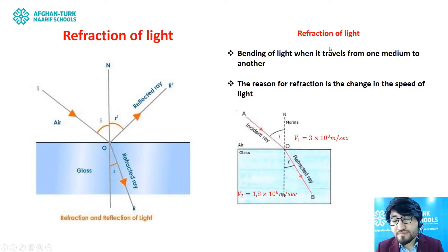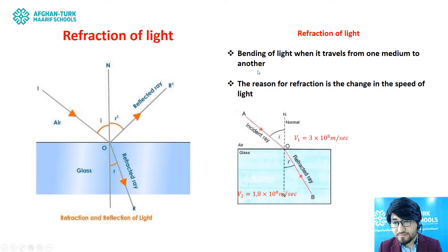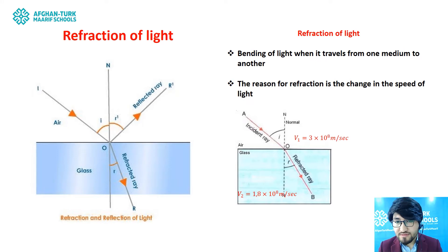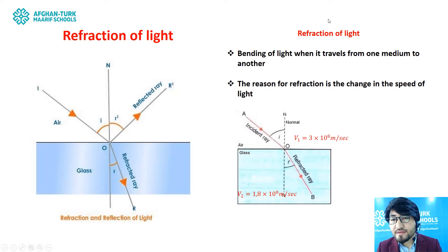Let me define refraction of light. Refraction of light is the bending of light when it travels from one medium to another — for example, from air to glass. The light changes its direction and bends when it travels from air to glass. These events are called refraction of light.